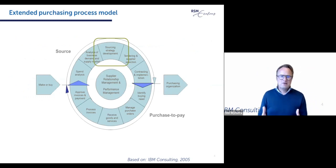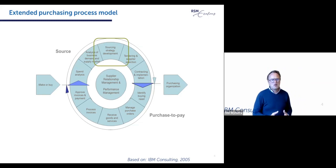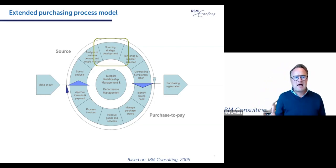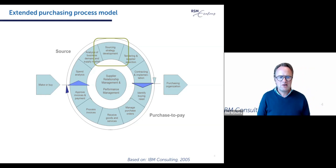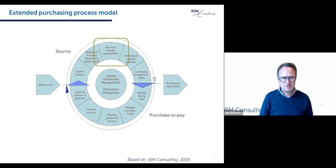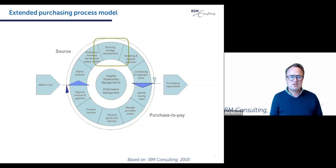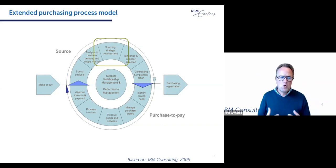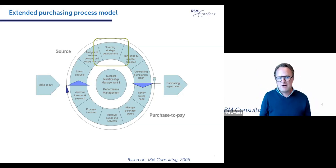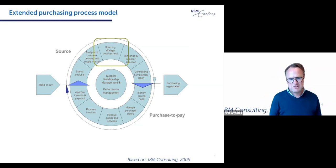To place it into context, it's helpful to look at a model such as this one by IBM, which is a popular reference model — a so-called purchasing process model. It identifies in the upper half the sourcing cycle, and in the bottom half the purchase-to-pay processes. In the upper half, you see a total of five core, more strategic processes, one of which is sourcing strategies, and that's exactly the topic of this lecture.